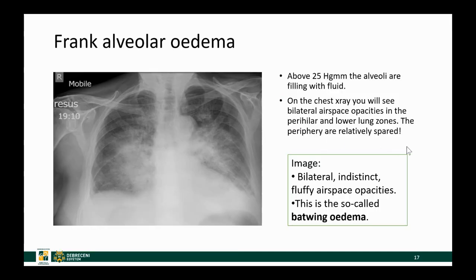When the pressure goes even higher, above 25 millimeters Hg, the alveoli will get filled with fluid and you will see the batwing edema — a fluffy, bilateral, central type of haziness or opacity that spares the periphery. This is very bad news for the patient when you see this chest X-ray.